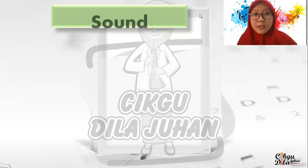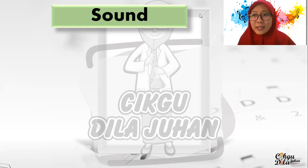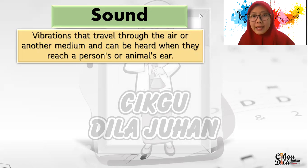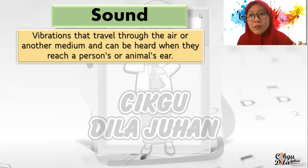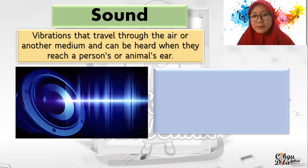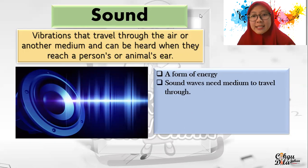First, we will learn about sound. What is sound? Can you hear my voice? That is a sound. So sound is vibrations that travel through the air or another medium and can be heard when they reach a person or animal's ear. We have ears and we can listen or hear a sound. So sound is a form of energy. Sound waves need a medium to travel through. Without a medium, sounds cannot travel.